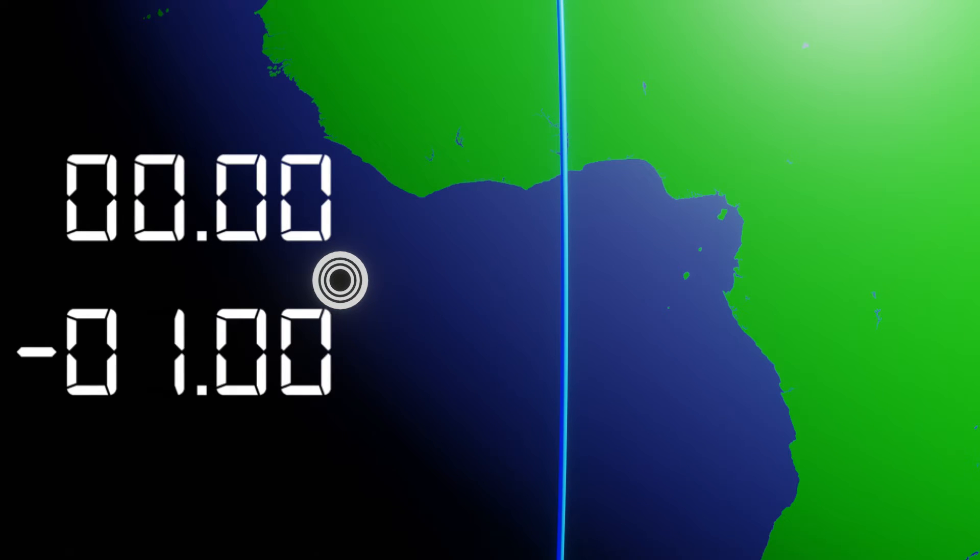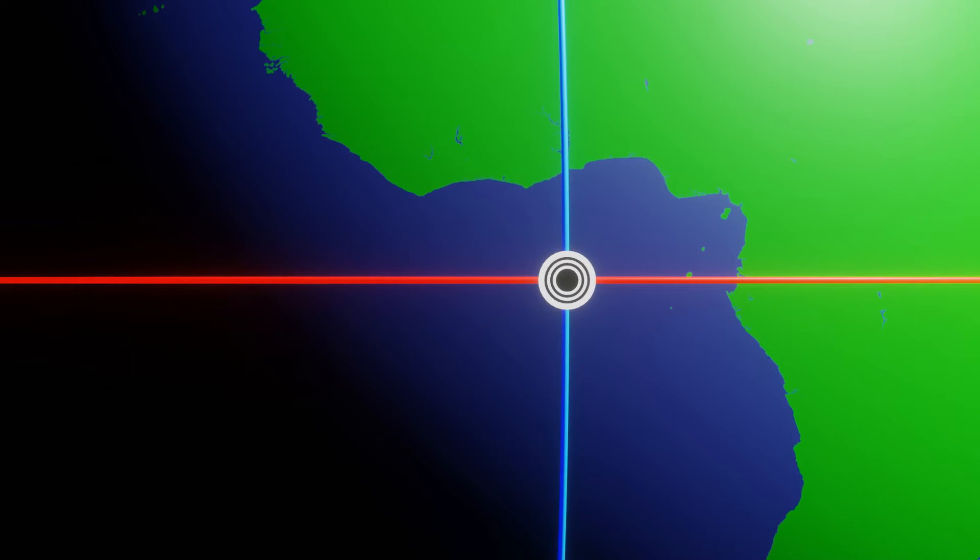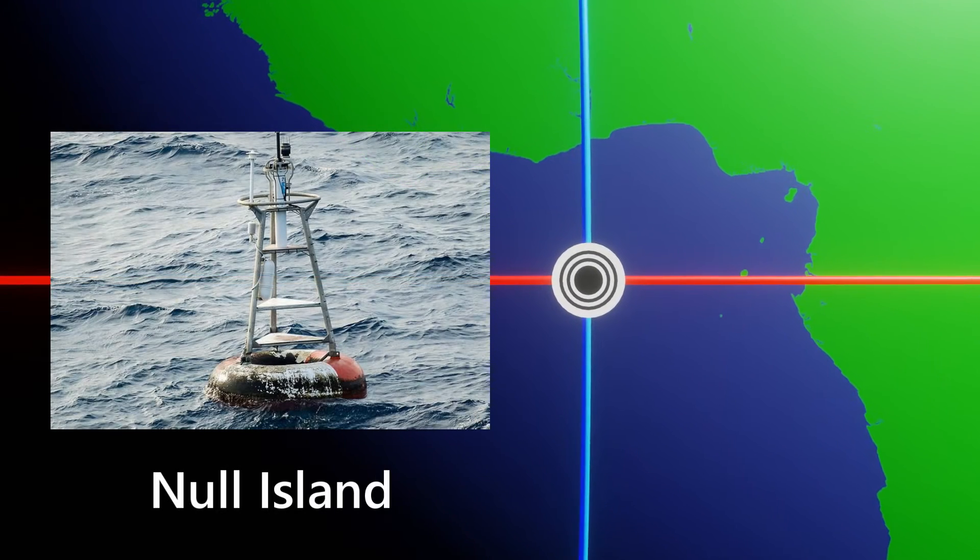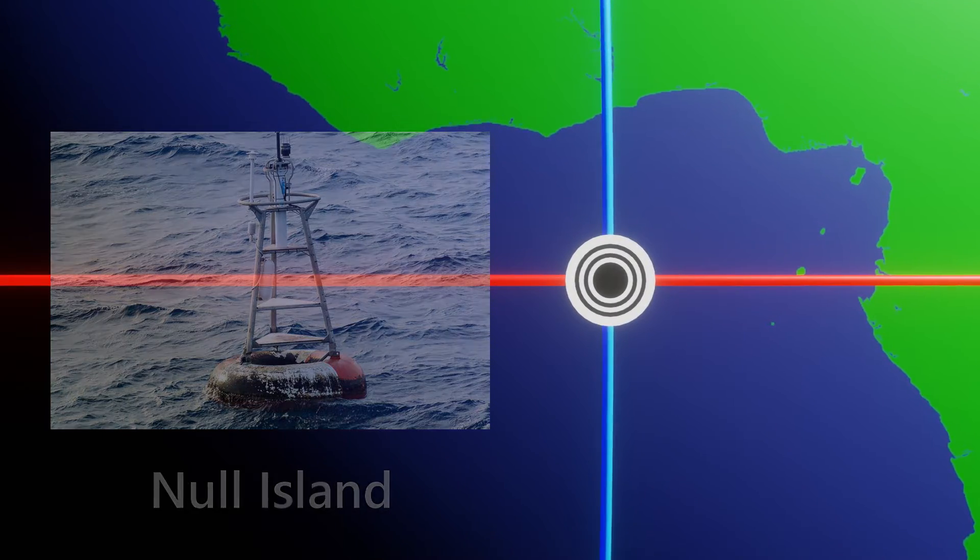Where our equator and UTC meet, our coordinates will read as zero latitude and zero longitude. This position sits in the ocean off West Africa and is known as Null Island. While there is no actual island, this position is marked by a navigation buoy.